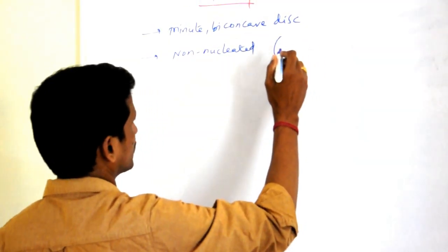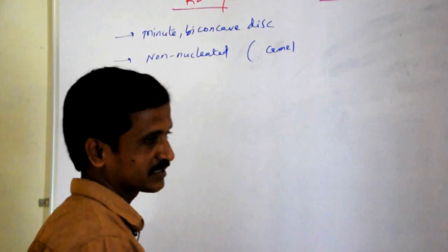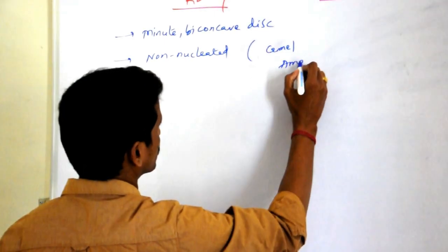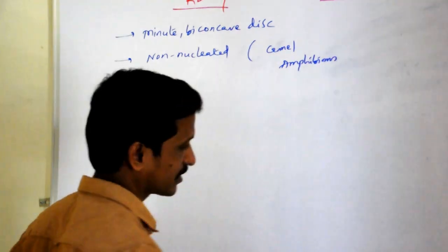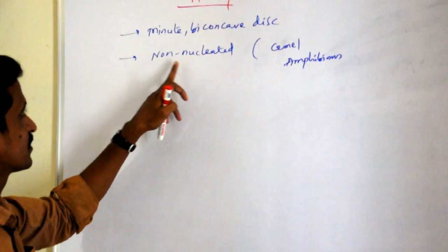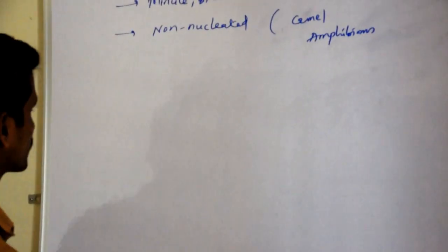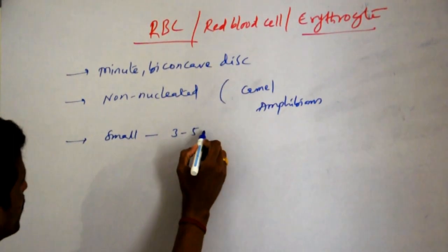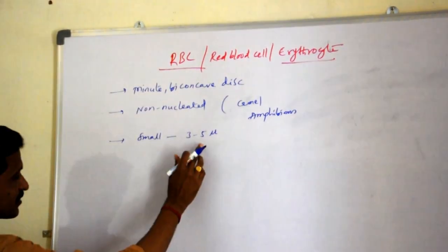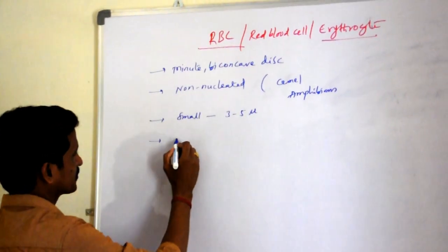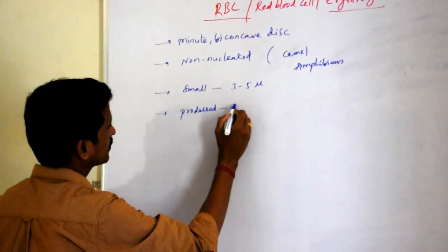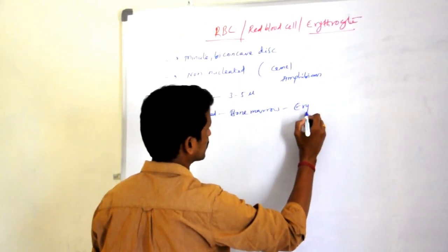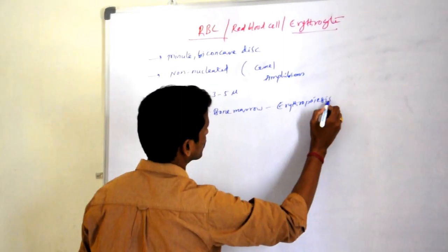There is one exception among mammals: camel's RBC possess a nucleus. Among vertebrates, amphibians' RBC also possess a nucleus and are larger in size. RBCs are very small, approximately 3 to 5 microns in diameter. They are produced in the bone marrow of long bones through a process called erythropoiesis.